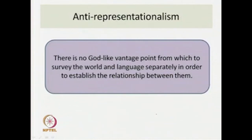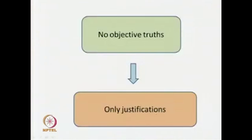Within this framework, we may still work through systems of re-description and re-signification to make the world a better place. There are no objective truths; in the Rortian scheme, there can only be justifications.